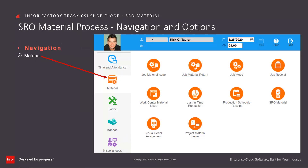To start the SRO material process, from the FactoryTrack Shopfloor WorkCenter Navigation homepage, click on the Material Category Group menu, then click on the SRO material icon. Note that the order of the features within the material menu is configurable.